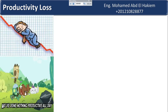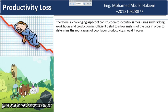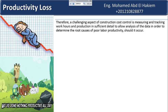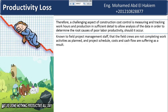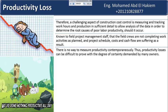A challenging aspect of construction cost control is measuring and tracking work hours and production in sufficient detail to allow analysis of the data in order to determine the root causes of poor labor productivity, should it occur. Field project management staff may know that field crews are not completing work activities as planned, and that project schedule, costs, and cash flow are suffering. There is no way to measure productivity contemporaneously, thus productivity losses can be difficult to prove with the degree of certainty demanded by many owners.